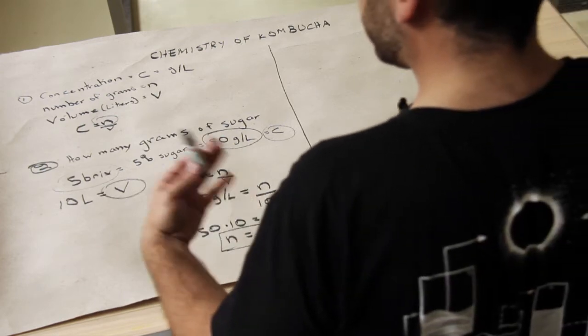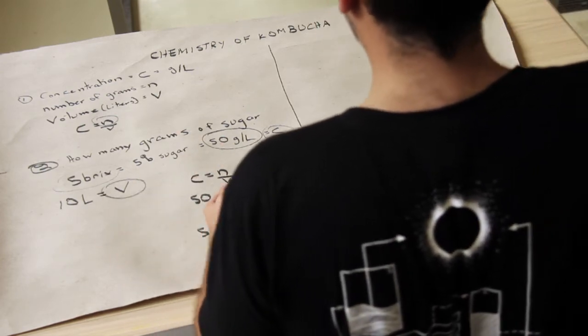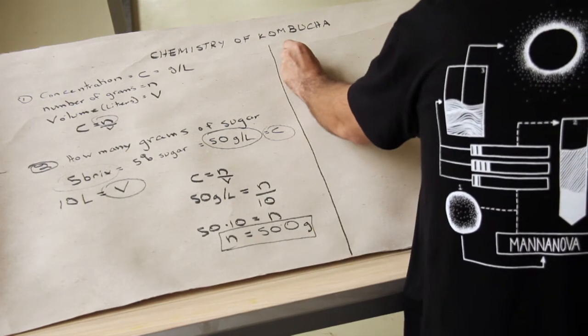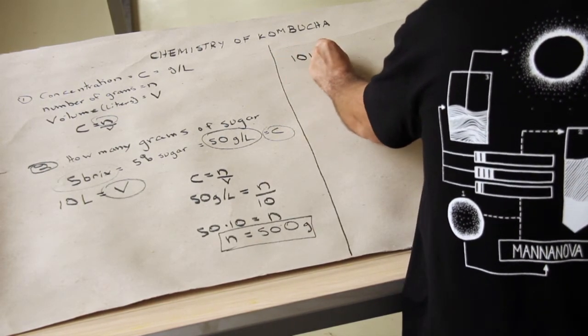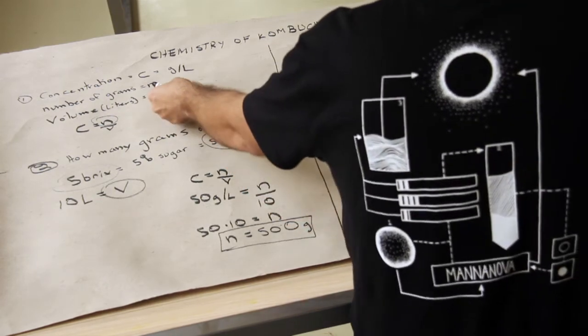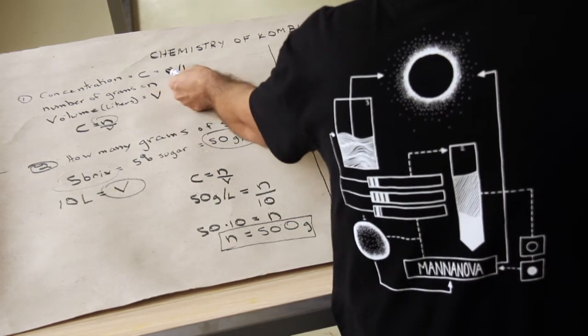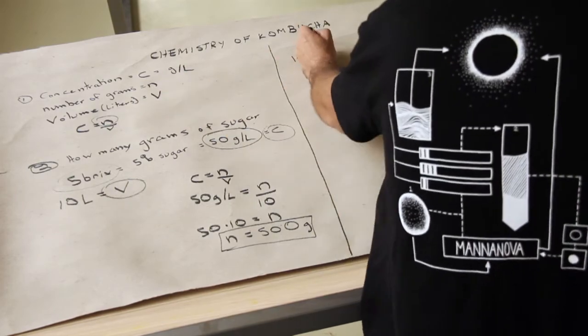How can you use this in a recipe? You can go backwards as well. You could go, I am making, let's say, 10 liters of product. So 10 liters is which variable? Is it V, N, or C? Is it concentration? No. Is it number of grams? No, it's volume, so it's V.